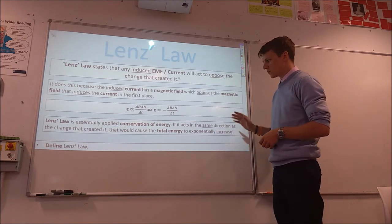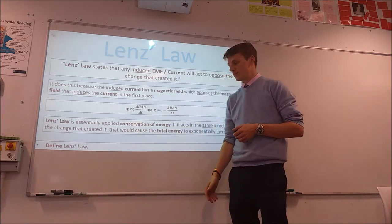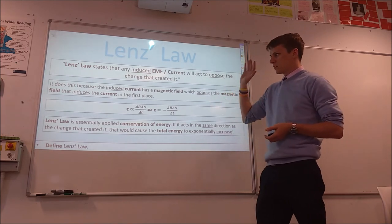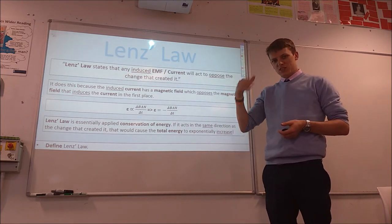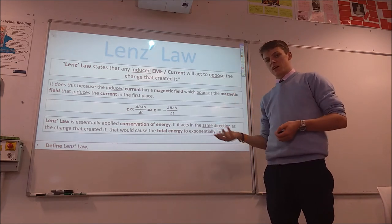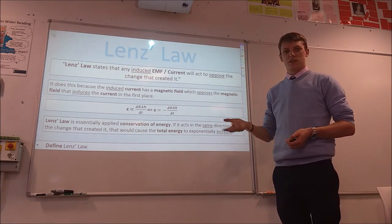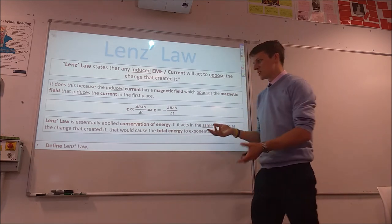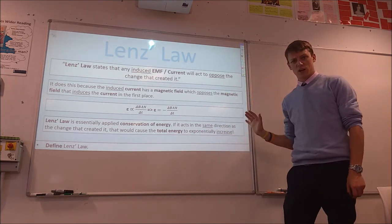This is actually a consequence of conservation of energy. If the induced EMF acted in the same direction as the change, a falling object would be accelerated by the magnetic force, cutting more flux lines per second, inducing a bigger current, leading to an exponential increase in kinetic energy — the object would get faster and faster. Conservation of energy says that can't happen, so the induced current must be in the opposite direction.